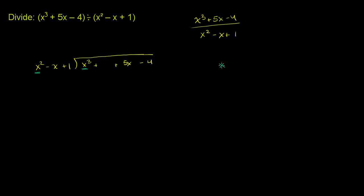It goes into it x times. x to the third divided by x squared is equal to x to the 3 minus 2, which is equal to x to the 1, which is equal to x. So it goes x times. I'll write the x right over here. And we multiply x times this entire thing. x times x squared is x to the third. x times negative x is negative x squared. x times 1 is positive x. And we want to subtract this whole expression from that whole expression, which is the same as adding the opposite.